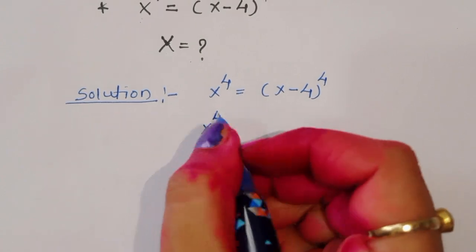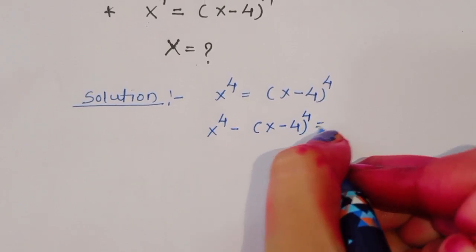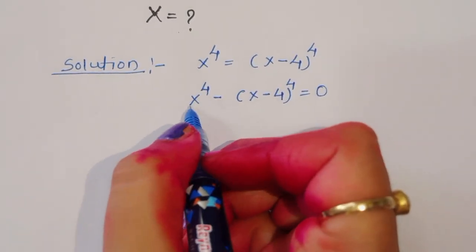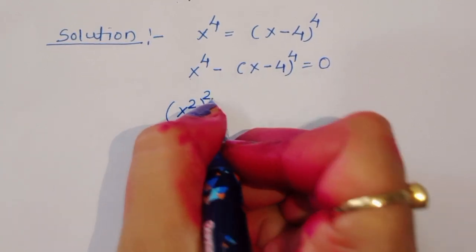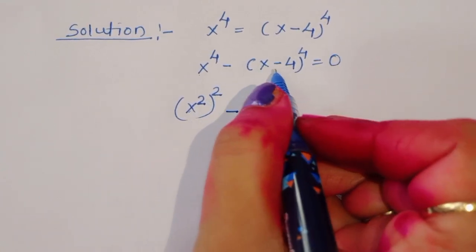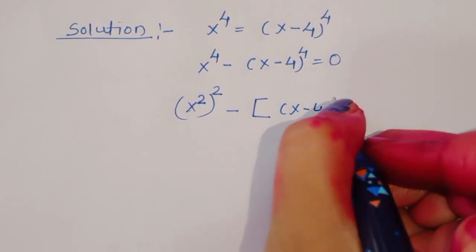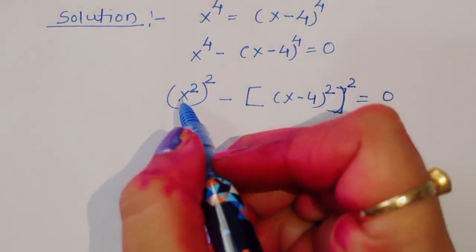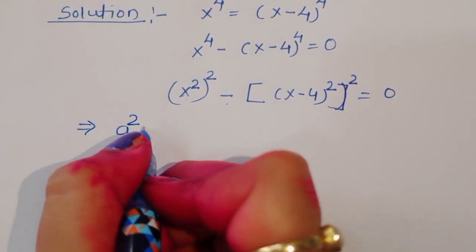We can rearrange this: x⁴ - (x-4)⁴ = 0. Now we convert each term into square form: (x²)² - ((x-4)²)² = 0.